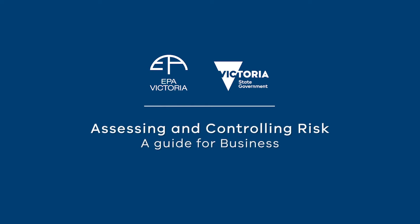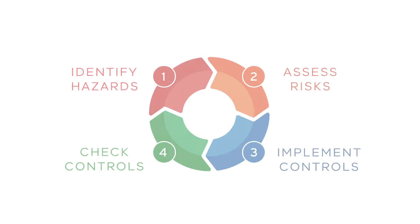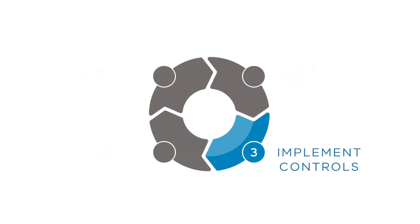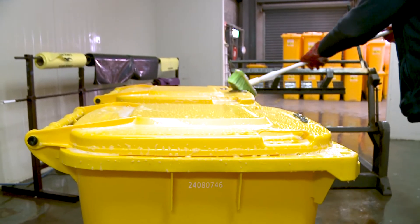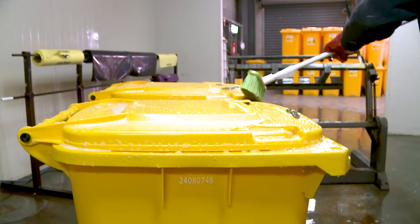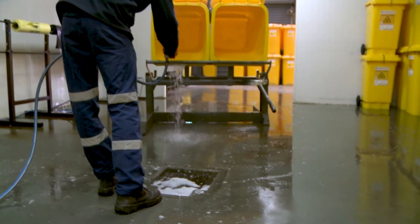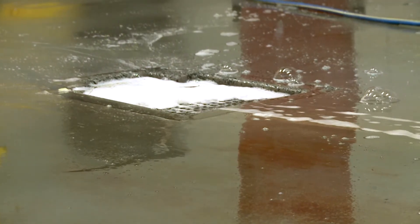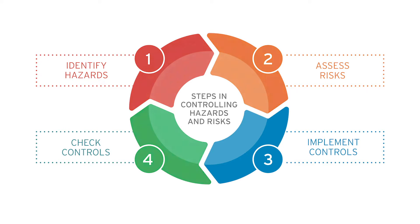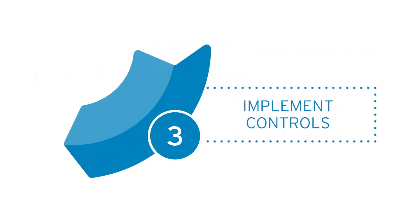Assessing and Controlling Risk – A Guide for Business. Video 3 – Implement Controls. The controls you set up to prevent your business activity from posing a risk to human health and the environment is a key priority. Let's discuss the third of these steps – how to implement controls.